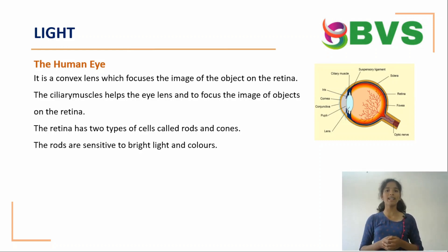The retina has two types of cells called rods and cones. Rods are sensitive to bright light and colors. Cones are sensitive to dim light. The optic nerve carries the sensation to the brain.